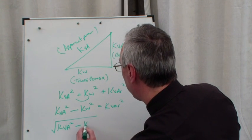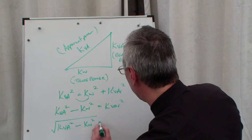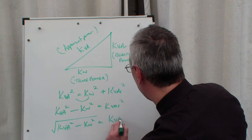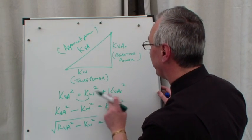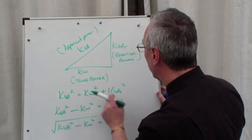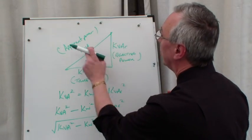√(kVA² - kilowatts²) = kVAR. And you could do the same for the kilowatts if you wanted to find that on its own.